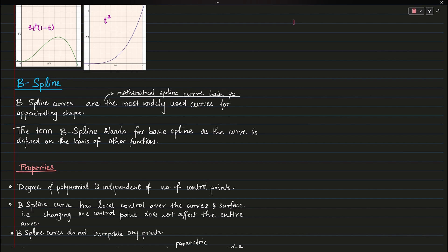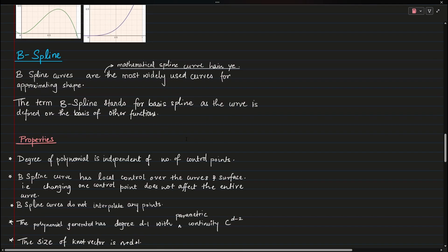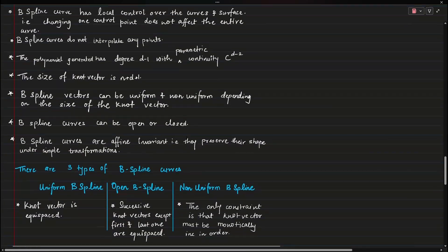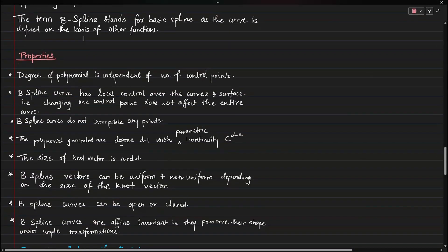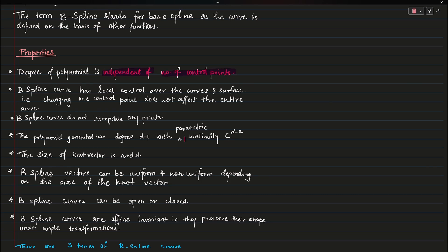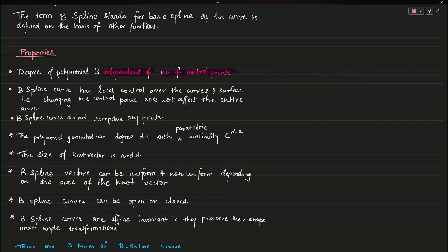B-spline curves are mathematical curves mostly used for approximating shape — all of these curves are extrapolated. B-spline stands for basis spline, as the curve is defined on the basis of other functions. There are a lot of properties you should know. The best one is that B-spline is independent of the number of control points — unlike Bezier where degree was n minus 1, in B-spline the degree is totally independent of the number of control points.